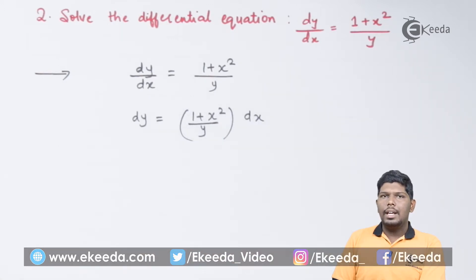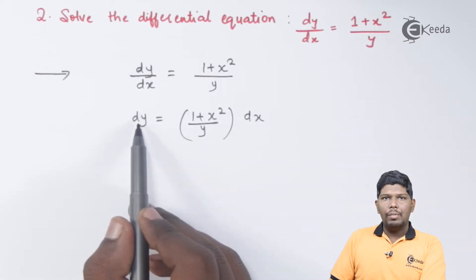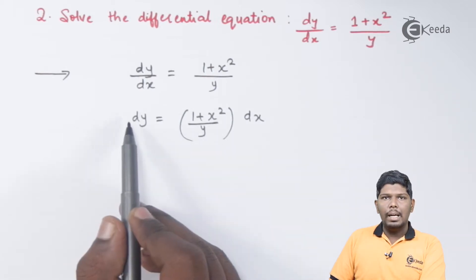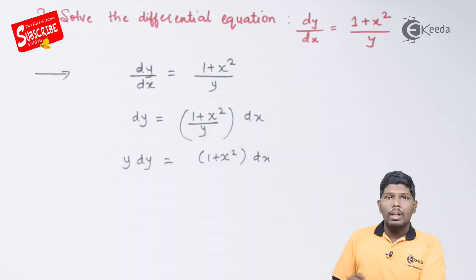Once both dy and dx are in numerator, then we can transfer the variables so we have dy on the left hand side with that y will be multiplied. As you can see now we have separated the variables.